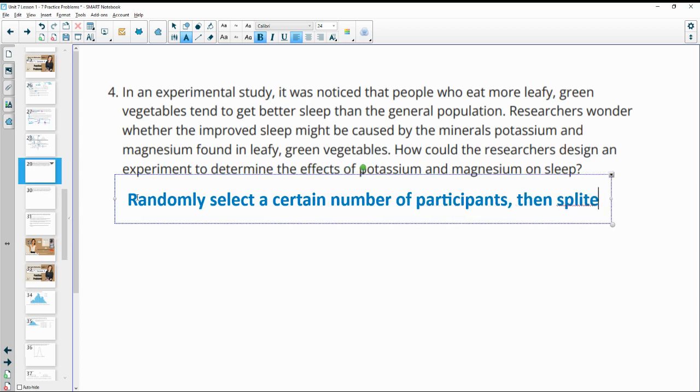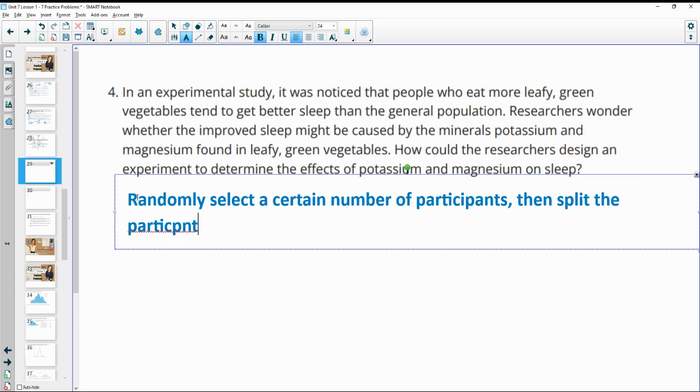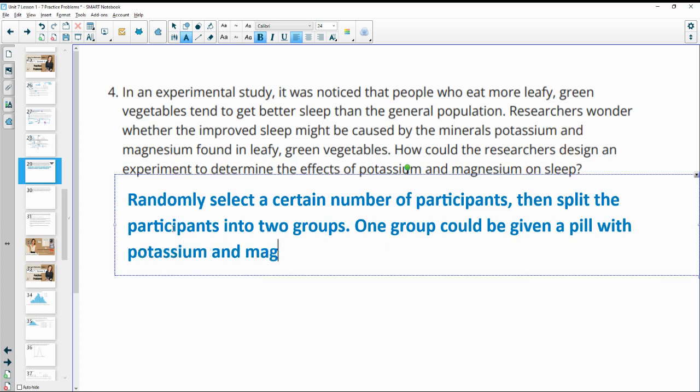Then split the participants into two groups. One group could be given a pill with potassium and magnesium. And the other group could be given a placebo pill that doesn't have that, but then they're not sure if they have it or don't have it. So the other group could be given a placebo pill.